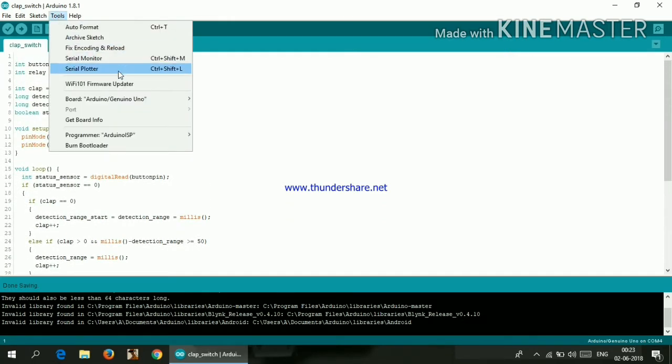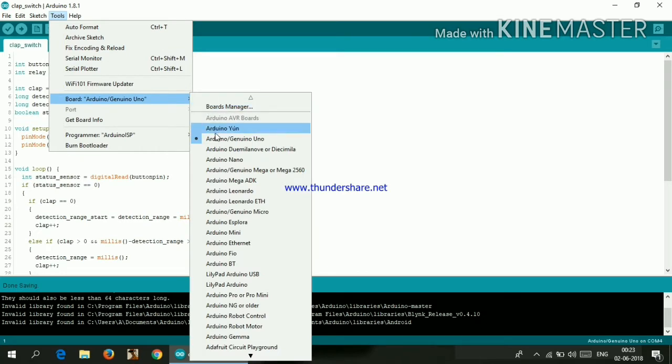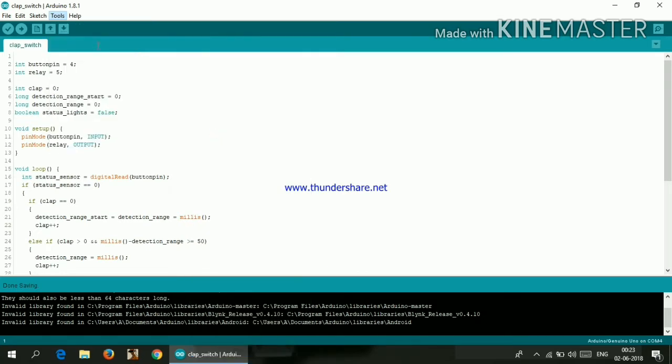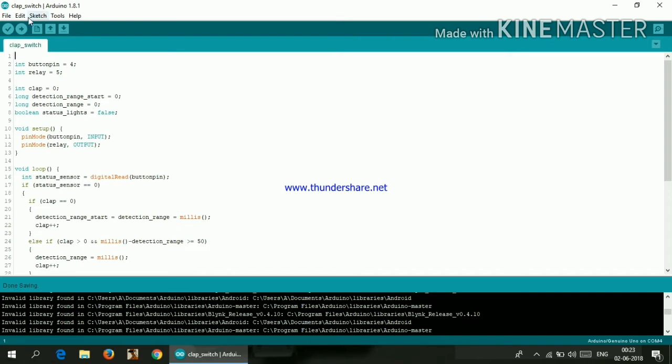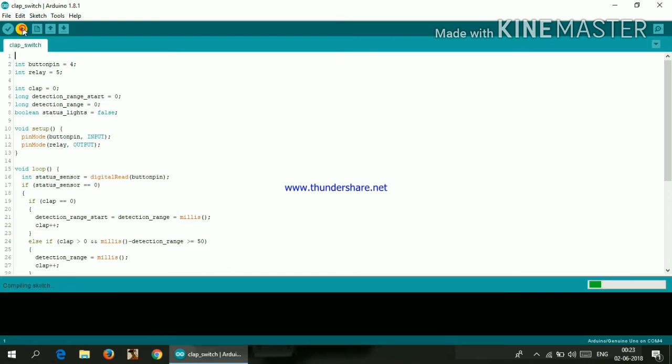Now go to your Tools, go to Board, and select Arduino/Genuino Uno. Now connect your Arduino Uno to your computer, and go to Tools and select Port. Click on whatever port it's showing, and then hit on Upload.